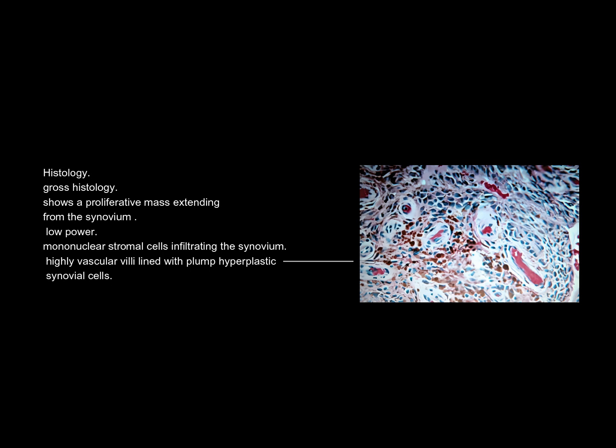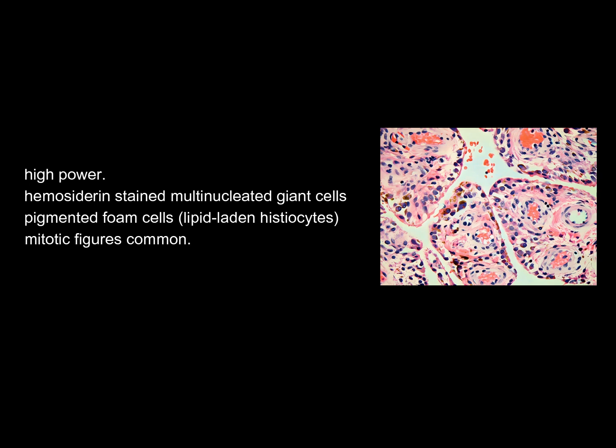Histology — Gross histology shows a proliferative mass extending from the synovium. Low power: mononuclear stromal cells infiltrating the synovium, with highly vascular villi lined with plump hyperplastic synovial cells. High power: hemosiderin-stained multinucleated giant cells, pigmented foam cells, lipid-laden histiocytes, and mitotic figures are common.